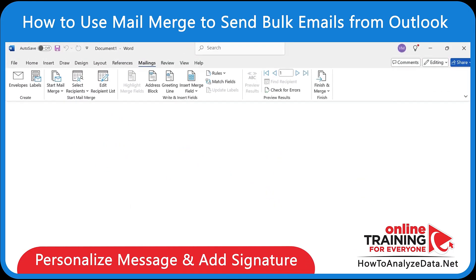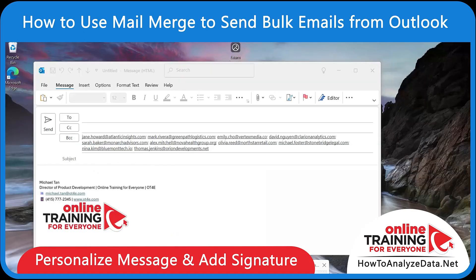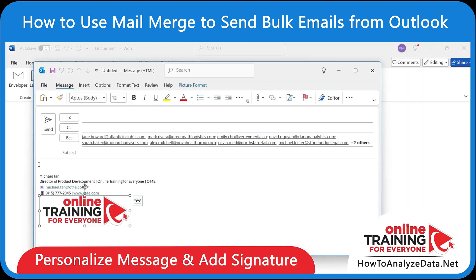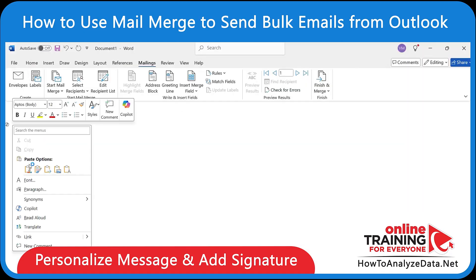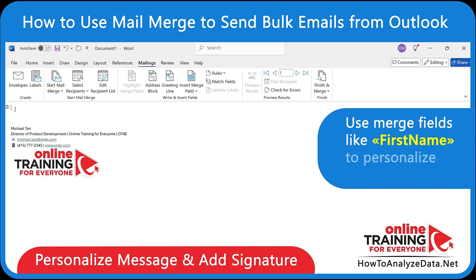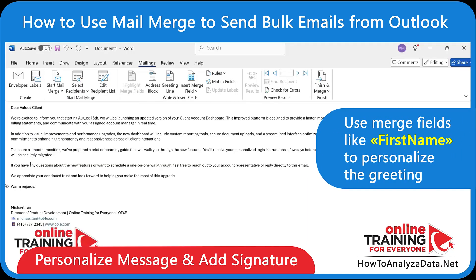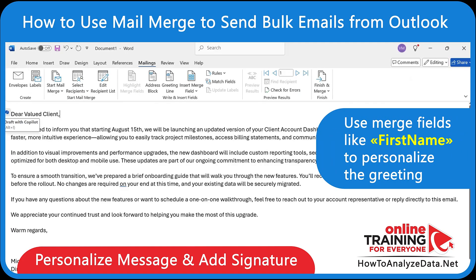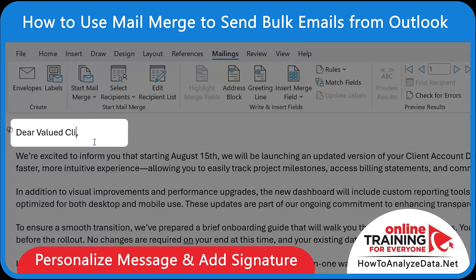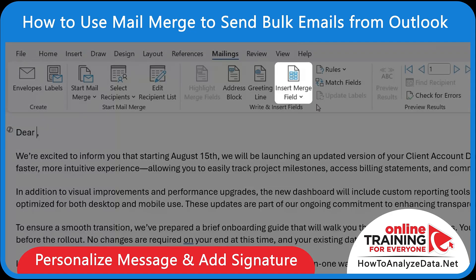Now you can write your email message directly in Microsoft Word. Don't forget to add your signature from Outlook. You can also use Merge Fields like First Name to personalize the greeting. To do it, find the right location for the field, then click Insert Merge Field and select First Name.